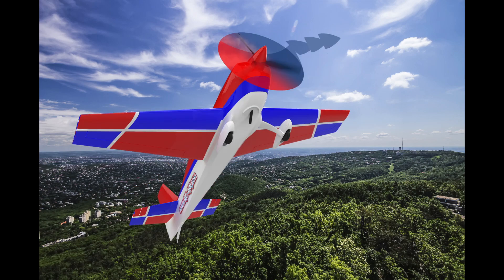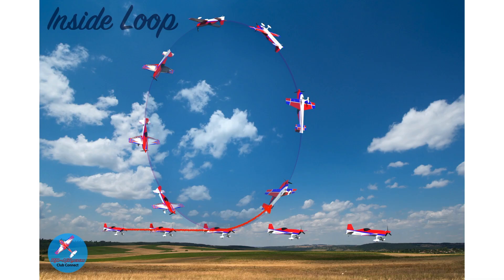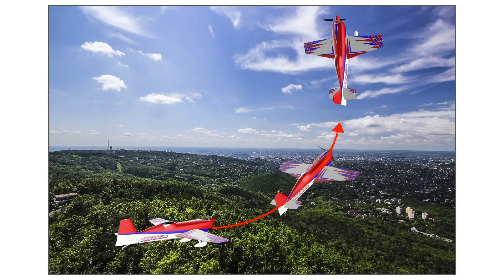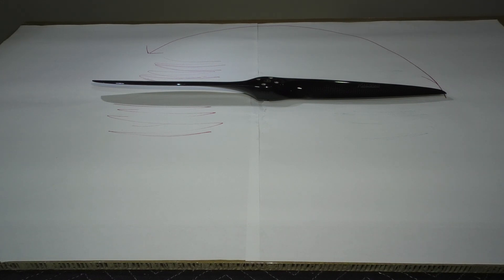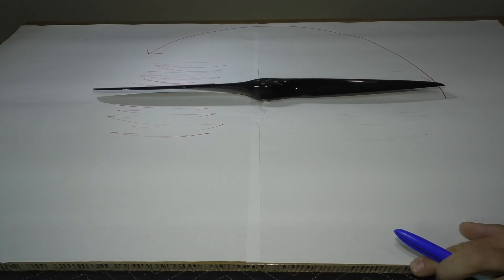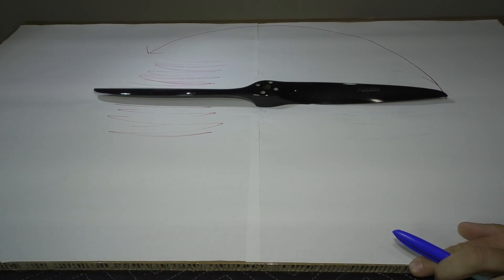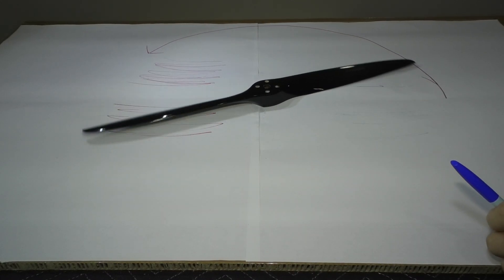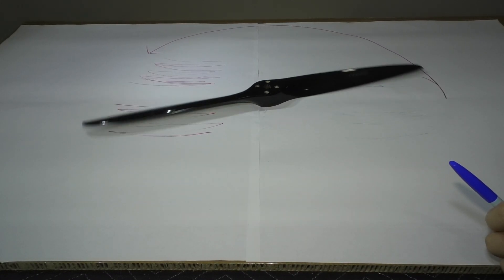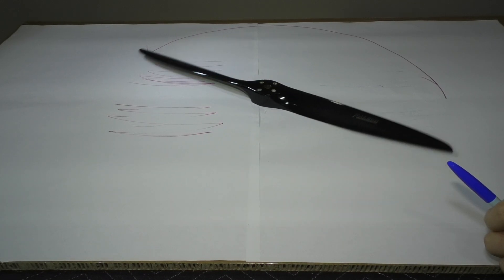The higher-pitched side is going to pull and cause the prop to pull the plane to one side. That's what happens when we do a loop or pull an upline. As soon as that upline levels out, you get equilibrium on both sides of the prop and it starts pulling straight again.